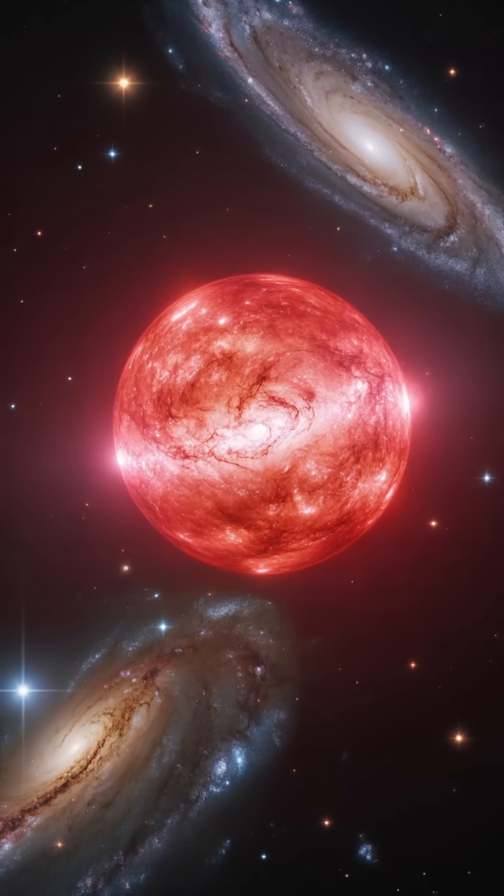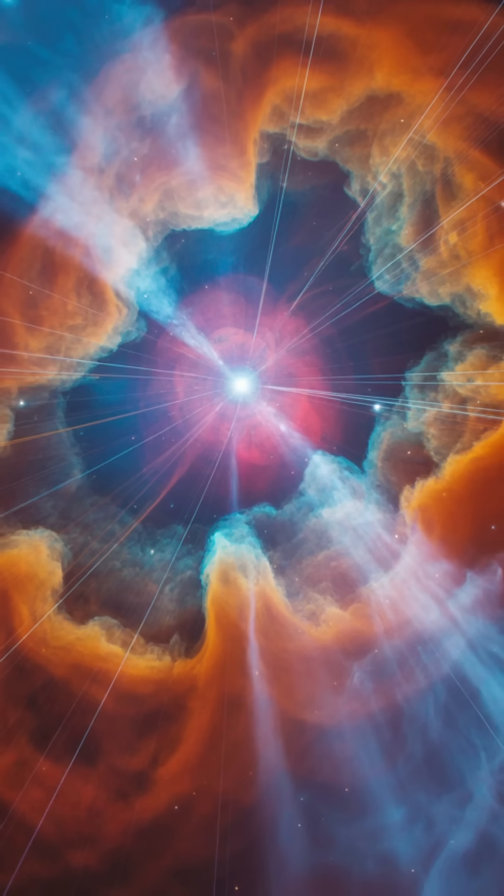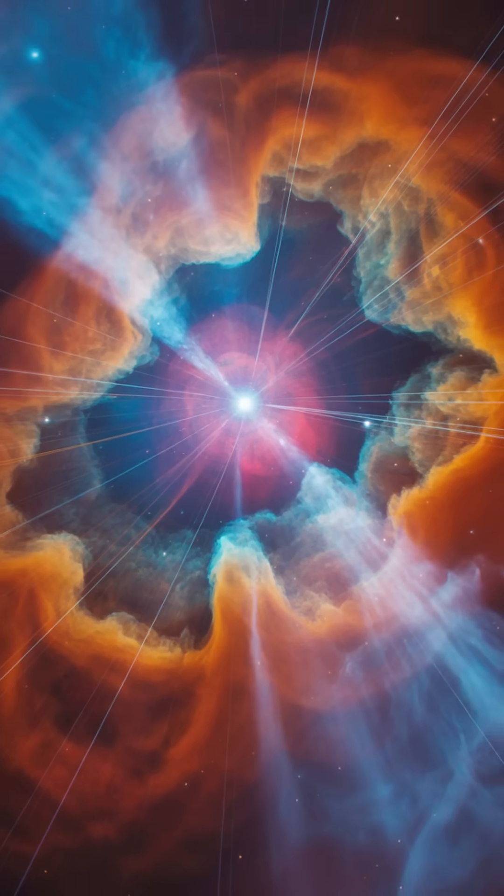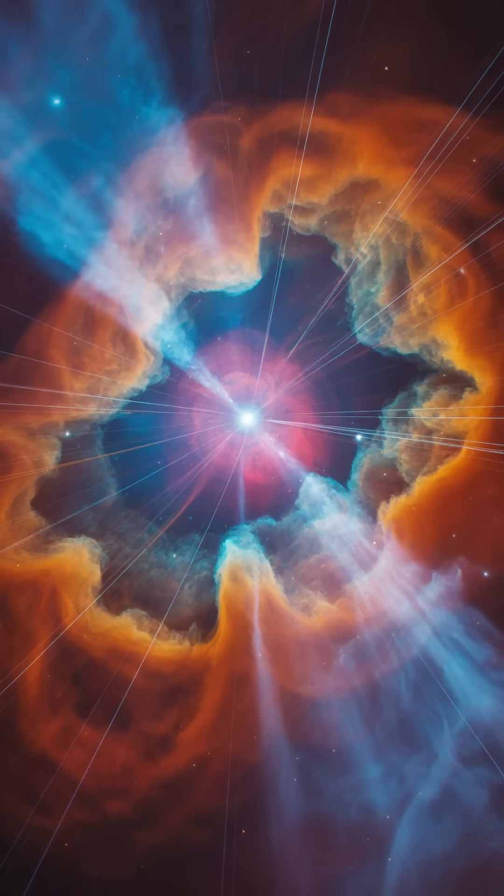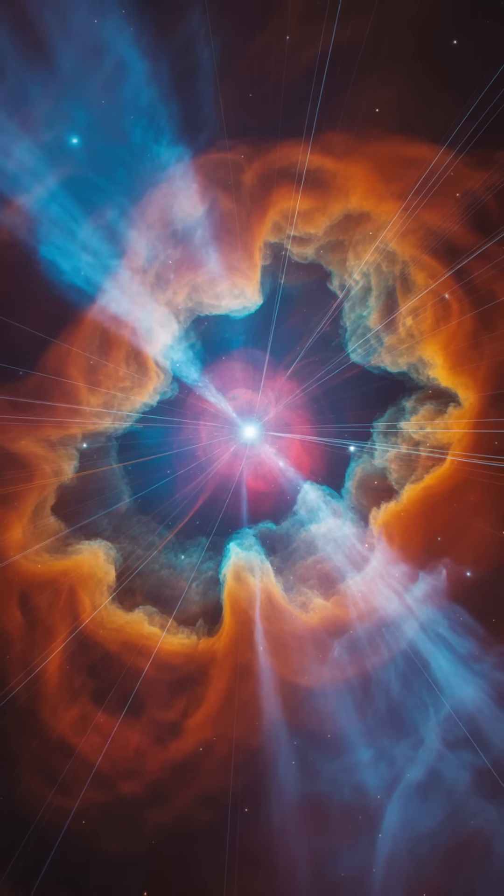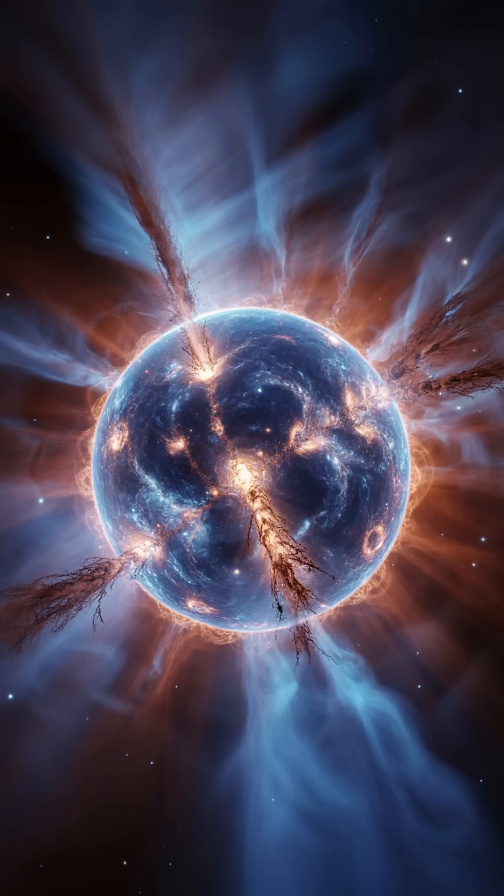For small stars, like our sun, the end comes slowly, gently, over billions of years. As their hydrogen fuel runs low, these stars swell into red giants, shedding their outer layers in spectacular glowing clouds called planetary nebulae.